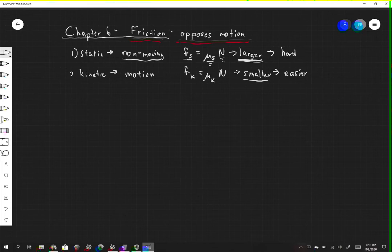Versus kinetic friction, which is friction due to motion when you're in motion. And the force of kinetic friction is mu K times the normal force, the coefficient of kinetic friction times the normal. And this is a bit smaller than the static friction.